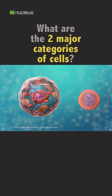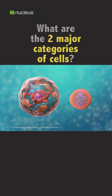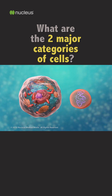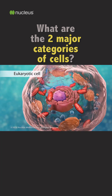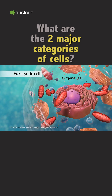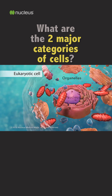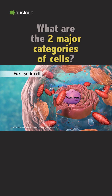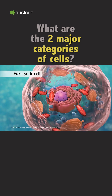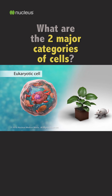There are two broad categories of cells. The first category is eukaryotic cells. They have organelles which include the nucleus and other special parts. Eukaryotic cells are more advanced, complex cells, such as those found in plants and animals.